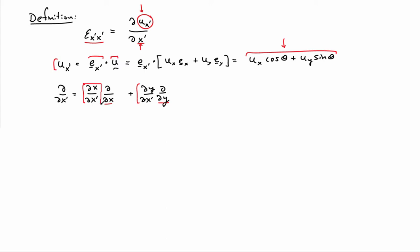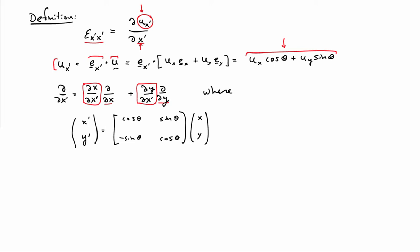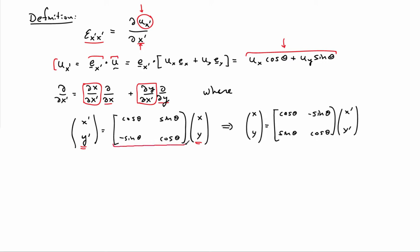I need to figure out what the derivative of x with respect to x prime is, and what the derivative of y with respect to x prime is — that is, the interrelationship between x, x prime, y, and x prime. I can get that from the geometry: x prime, y prime is given by the rotation matrix times x, y. To find x and y in terms of x prime, y prime, I invert this relationship. Since this is a rotation matrix, its inverse is just its transpose. So x, y in terms of x prime, y prime is obtained by pre-multiplying by the transpose of the rotation matrix. This gives: the derivative of x with respect to x prime is cosine theta, and the derivative of y with respect to x prime is sine theta.